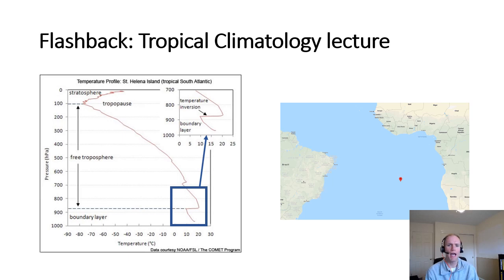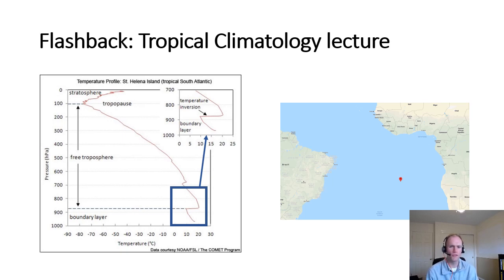Going back to our tropical climatology lecture from the first week of the semester, we looked at this sounding for St. Helena Island in the tropical South Atlantic, about a third of the way closer to Africa than to South America. The pressure has a linear scaling and the isotherms are straight up and down, but it still gives us the same idea of the sounding structure. We see a boundary layer where temperature decreases from about 17°C to about 10°C over about a kilometer in depth. Then there's a very rapid increase in temperature with height to 20°C or more — a very rapid increase within a very shallow layer, separating the boundary layer air mass from the free troposphere.